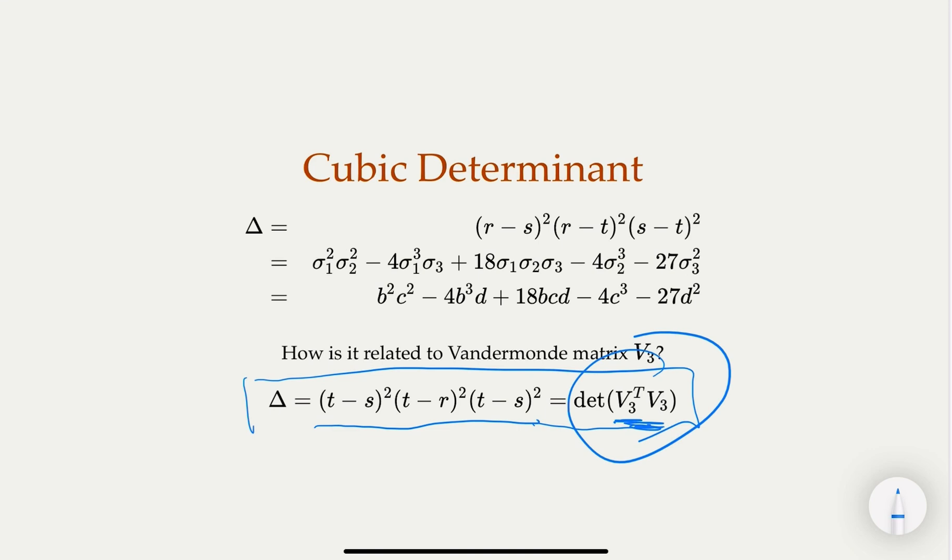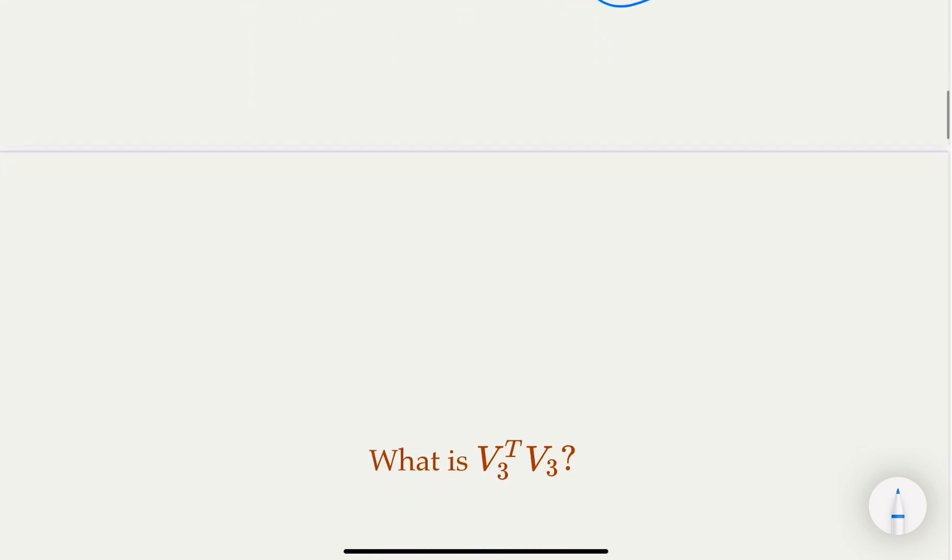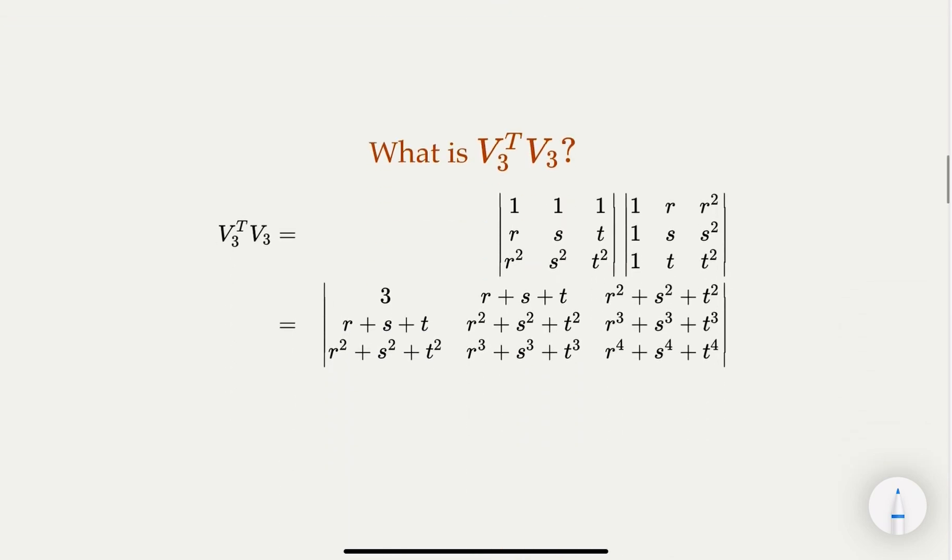Earlier we learned that the determinant is actually this. So can we calculate from the matrix instead? This is the subject today. So let's try to expand out this matrix - the transpose times itself.